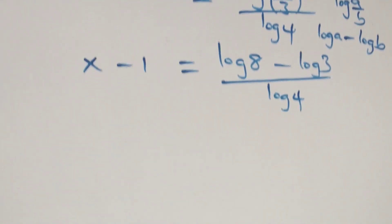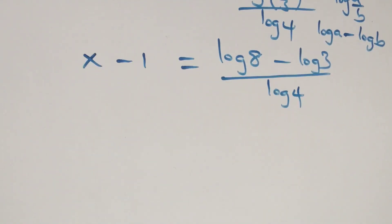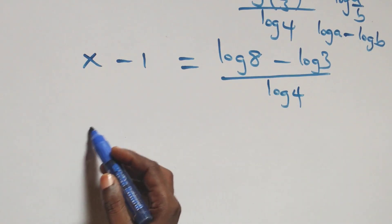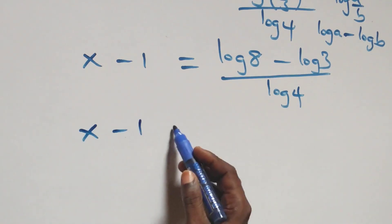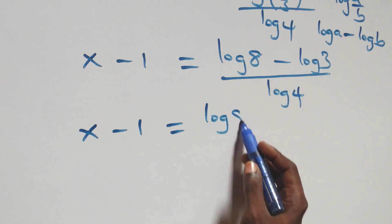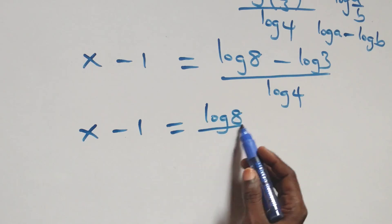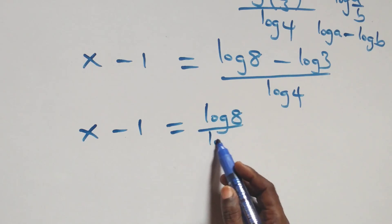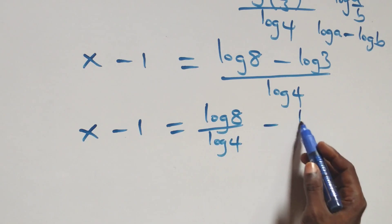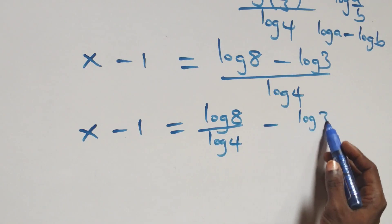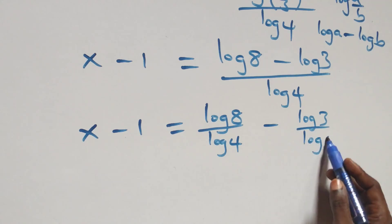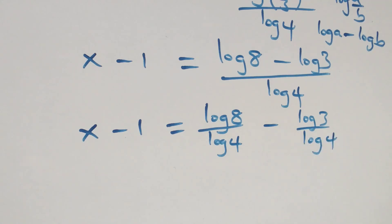We separate this into two fractions: x minus one equals log 8 over log 4, minus log 3 over log 4.